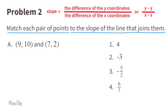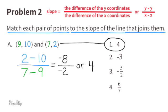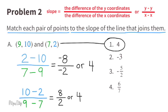Here we go. A: 2 minus 10 over 7 minus 9. On top, we have the difference of the y values, which is 2 minus 10, or negative 8. On the bottom, we have the difference of the x values, which is 7 minus 9, or negative 2. Since negative 8 divided by negative 2 is 4, the slope of this line is 4. I also could have done it this way: 10 minus 2 over 9 minus 7. 10 minus 2 is 8, and 9 minus 7 is 2. 8 divided by 2 is 4. The slope of the line that matches these pair of points is 4.